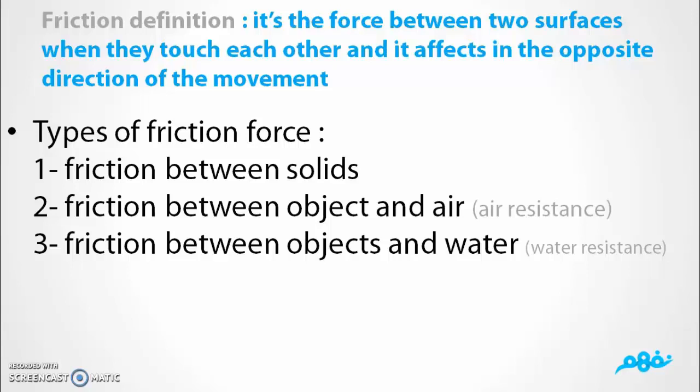We have three types of friction. Friction between solids, friction between objects and air, and friction between objects and water. Friction between objects and air is called air resistance. Friction between objects and water is called water resistance.